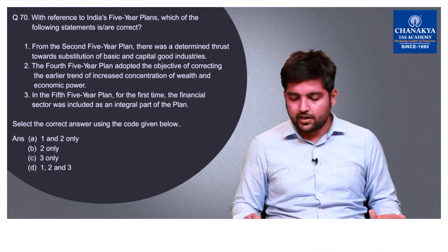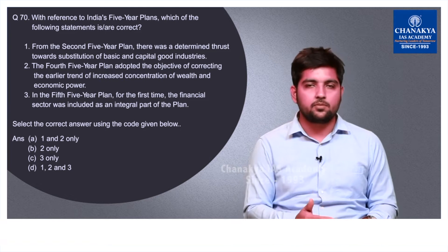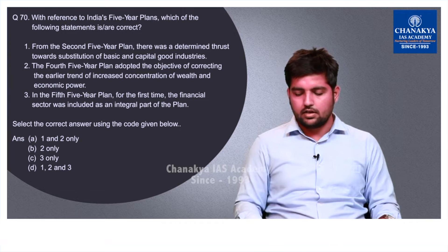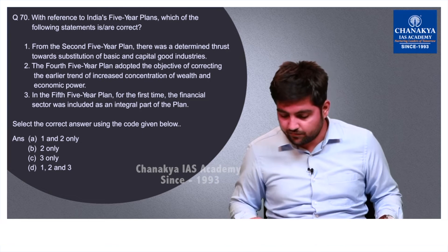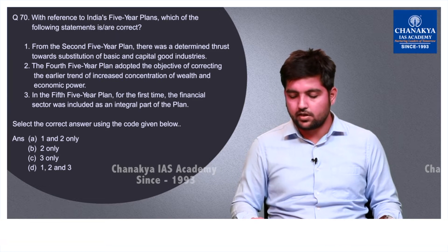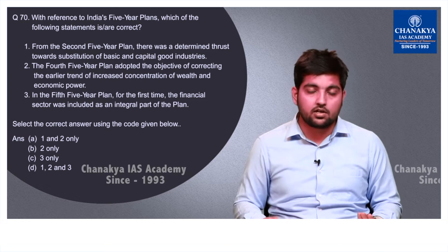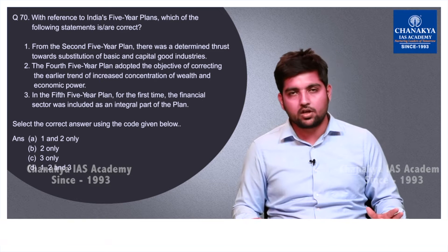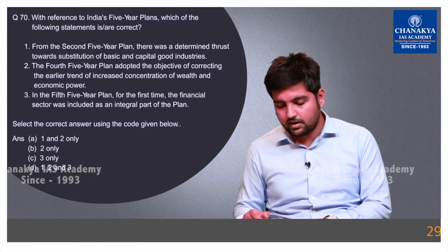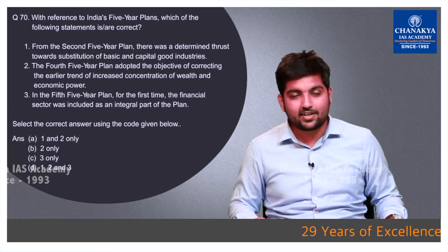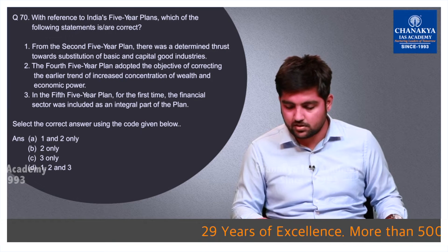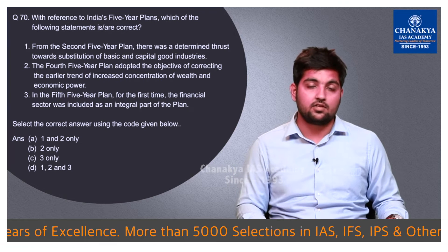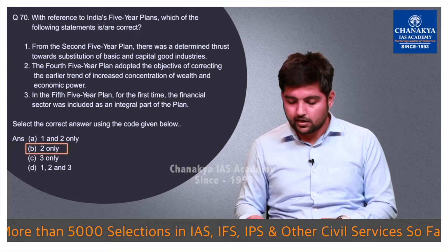Question number 70 is about India's Five Year Plans. Statement 3 — that in the Fifth Five Year Plan, the financial sector was for the first time included as an integral part — is wrong. It was the Third Five Year Plan, when the Indira Gandhi government nationalized around 14 banks. Excluding statement 3, we are left with options A or B. The first statement about a determined thrust towards substitution of basic and capital goods from the Second Plan is too extreme, so it is wrong. The correct answer is B — 2 only.